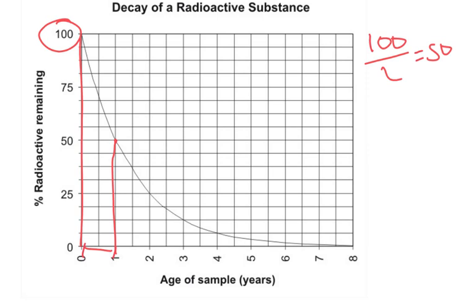In this case it was one year. Half of fifty is twenty-five, so if we look at twenty-five, again the same amount of time — from one to two years, which is also one year. And if we look further, halfway here is twelve point five — again, exactly the same amount of time.